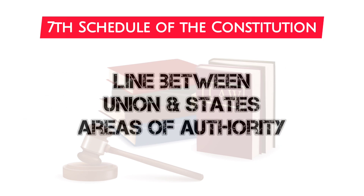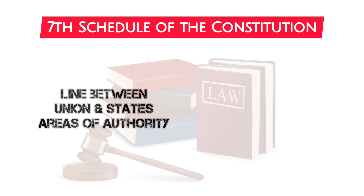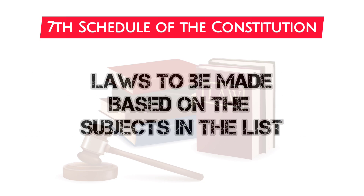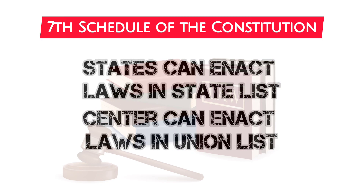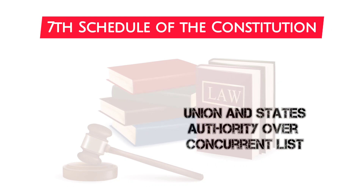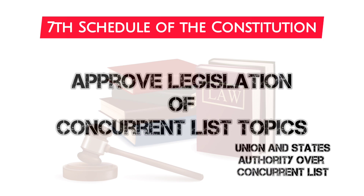The seventh schedule establishes a distinct line between the Union and the states' respective areas of authority and responsibility, preventing any duplication or conflict. It also ensures that the power to make laws is distributed between the Union and states based on the subjects mentioned in the three lists. The state governments have the authority to enact laws on matters listed in the state list, whereas the Union government has the authority to do so for matters listed in the Union list. Both the Union and the state governments share responsibility for the concurrent list and have authority to approve legislation related to these topics.